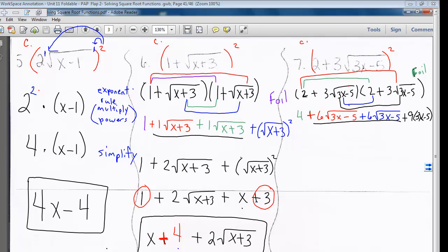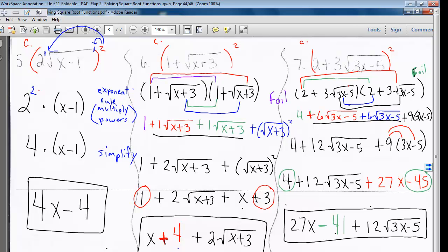Combining like terms, we get 4 plus 12 times the square root of 3x minus 5, plus 9 times the 3x minus 5. Simplifying, we've got to distribute the 9 through. I get 27x minus 41, plus 12 times the square root of 3x minus 5.